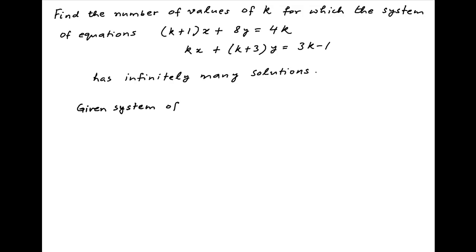The given system of equations will have infinitely many solutions if one equation is a scalar multiple of the other. This happens when the ratio of the coefficients of x in both equations, that is (k+1) upon k, is equal to the ratio of the coefficients of the y terms, which is 8 upon (k+3), is equal to the ratio of the constant terms, which is 4k upon (3k-1).